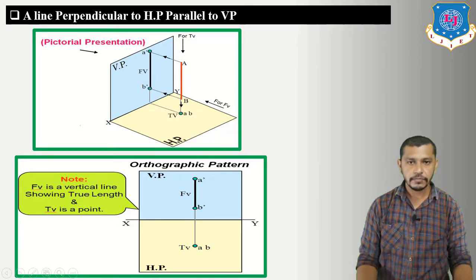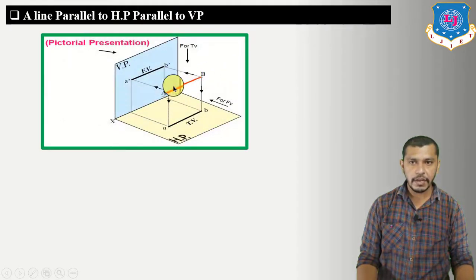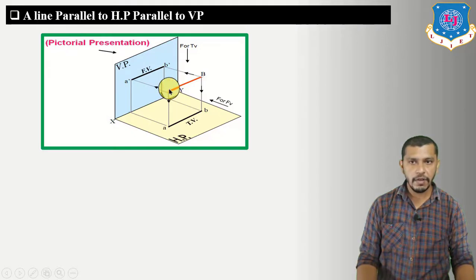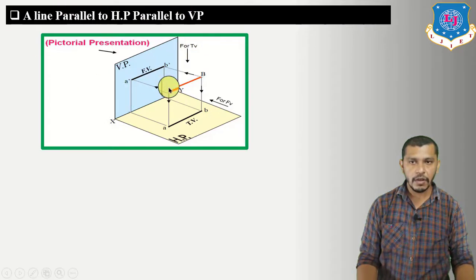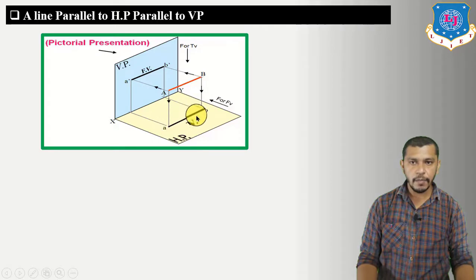Case 2 — a line parallel to HP and VP both. The pictorial presentation shows line AB parallel to both the horizontal plane and vertical plane. To draw the plan, we draw projection lines perpendicular to the horizontal plane from A and B, getting the plan of each point. Connecting them gives the top view or plan of line AB.